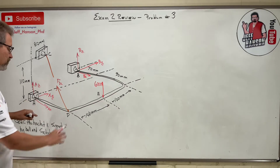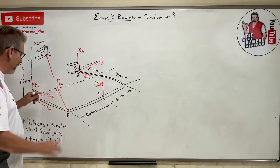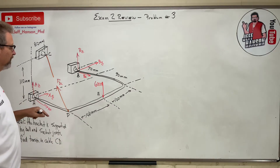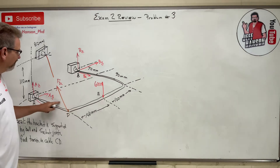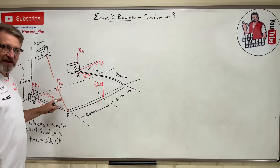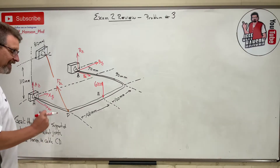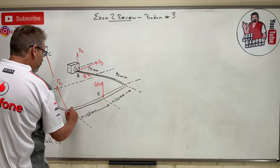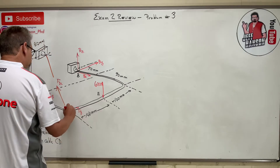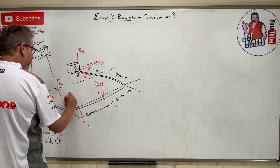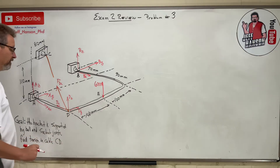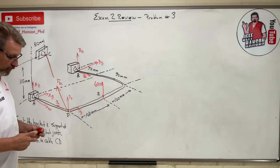You can ask yourself: can I grab that bar and move it in x? No. In y? No. In z? No. That's why there's a reaction in each direction. And then we have the cable force — that's a 3D force vector. I'd say it's going to have a y-component (Dy), a positive z-component, and a negative x-component.